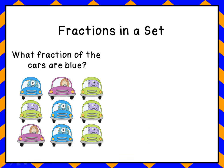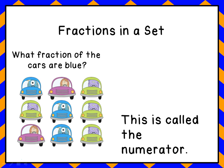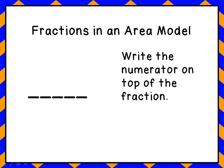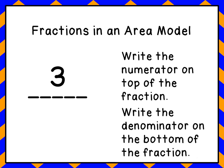Now the next thing we're going to do is count the blue cars. We got one, two, three blue cars. That number is called the numerator. So we write the numerator on top of the fraction — we had three blue cars. We write the denominator on the bottom of the fraction — we had nine cars all together. So to answer the question, what fraction of the cars are blue? Three-ninths of the cars are blue.